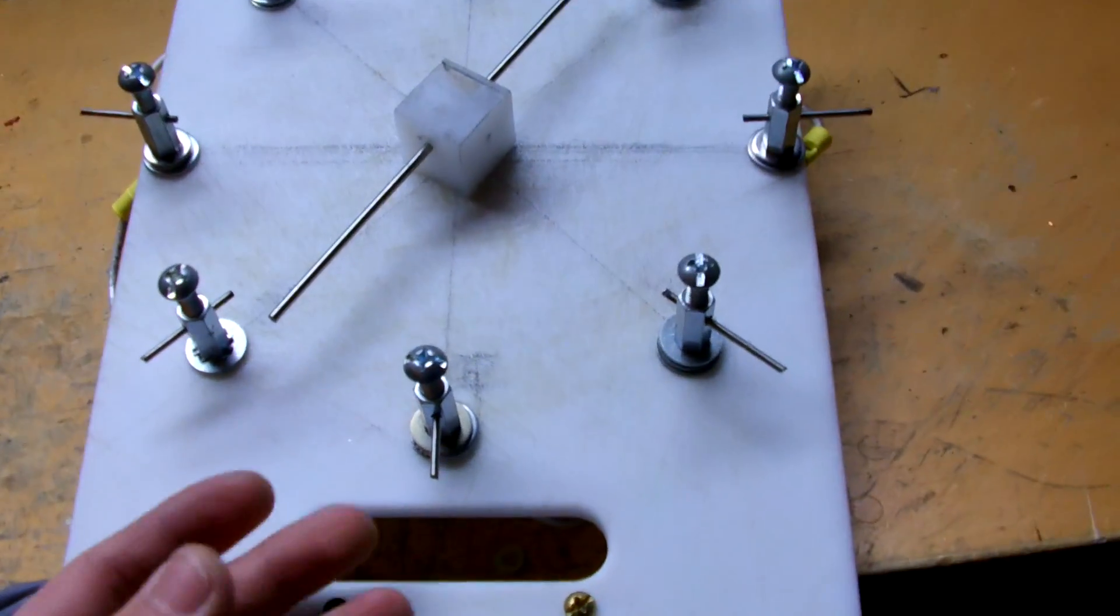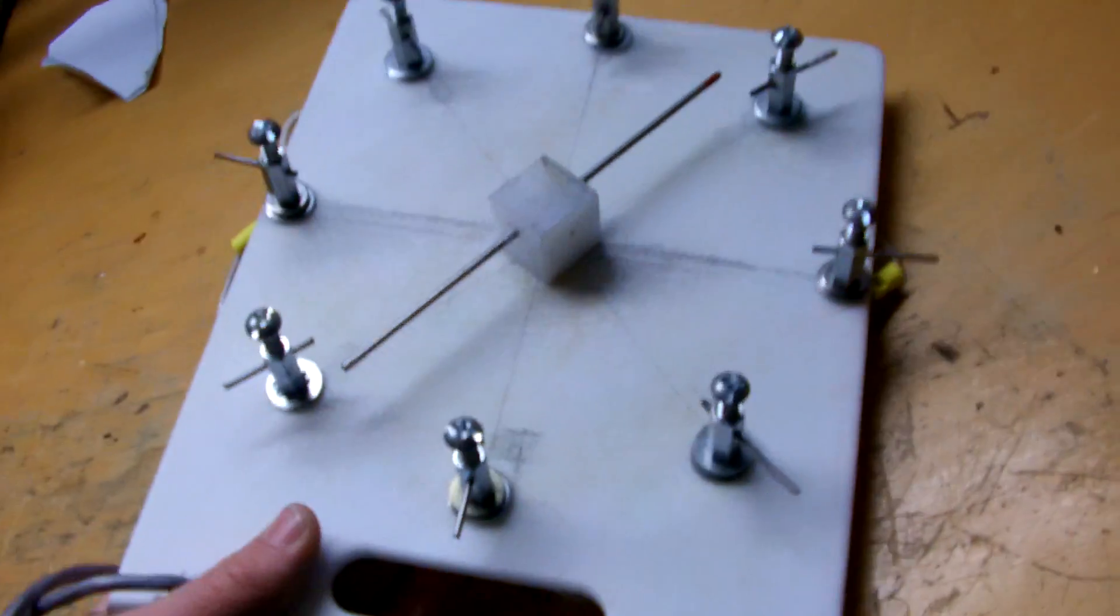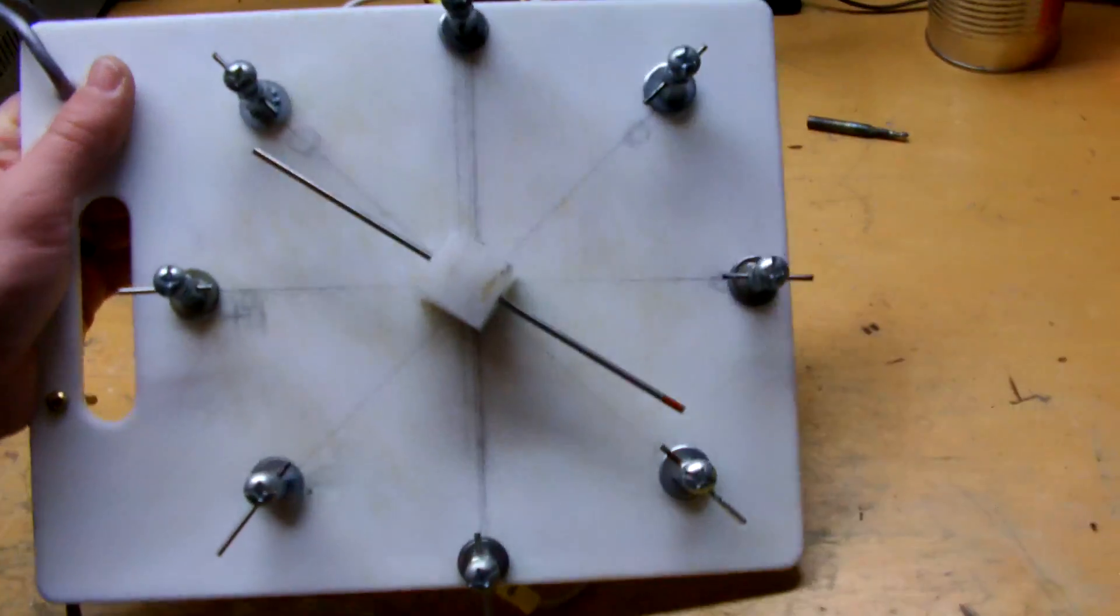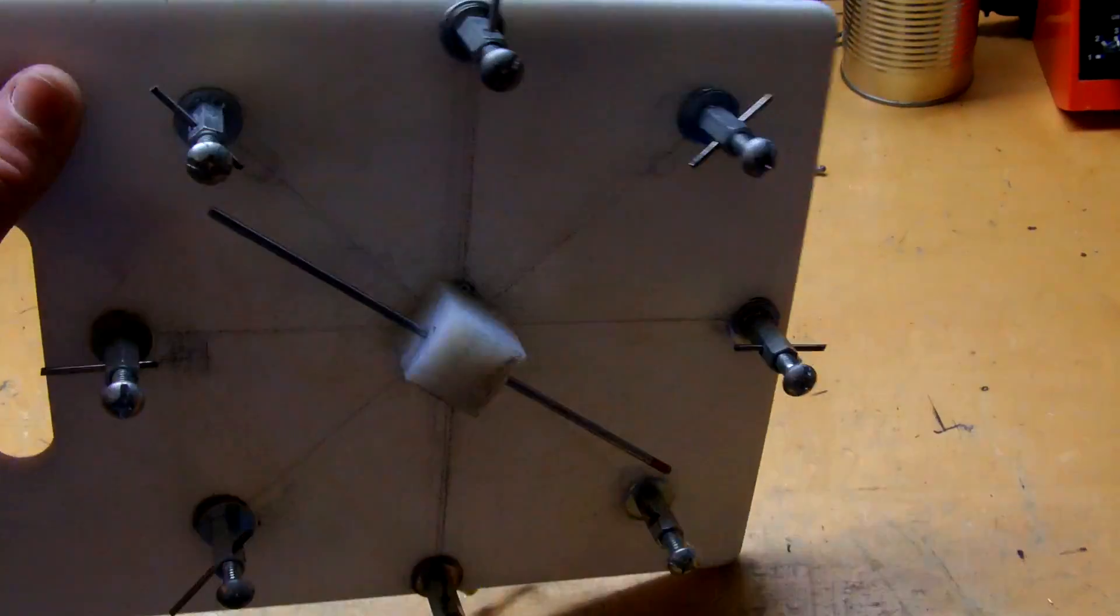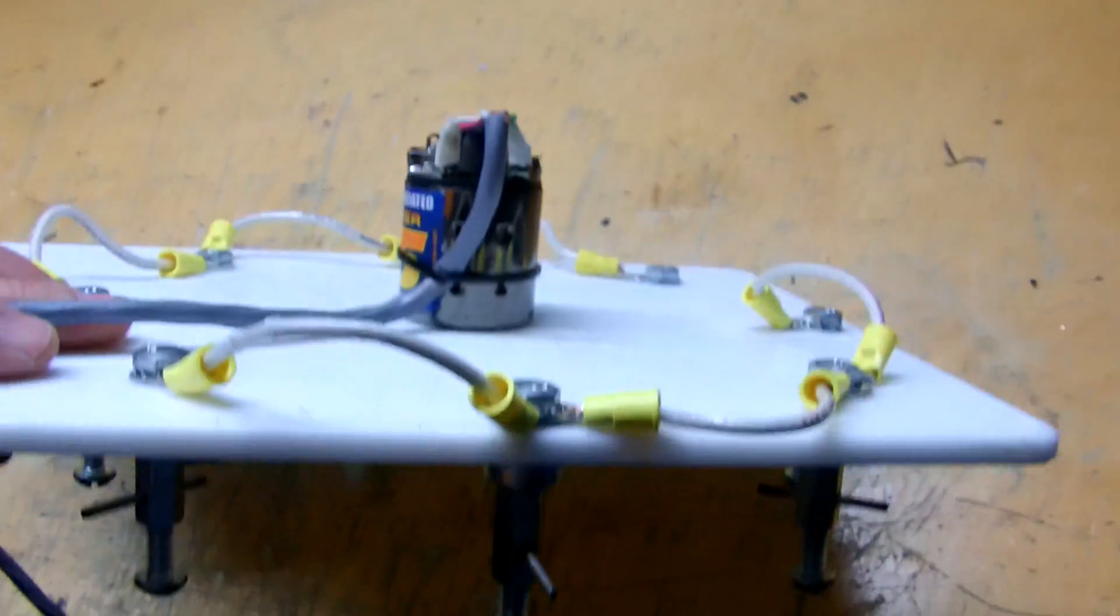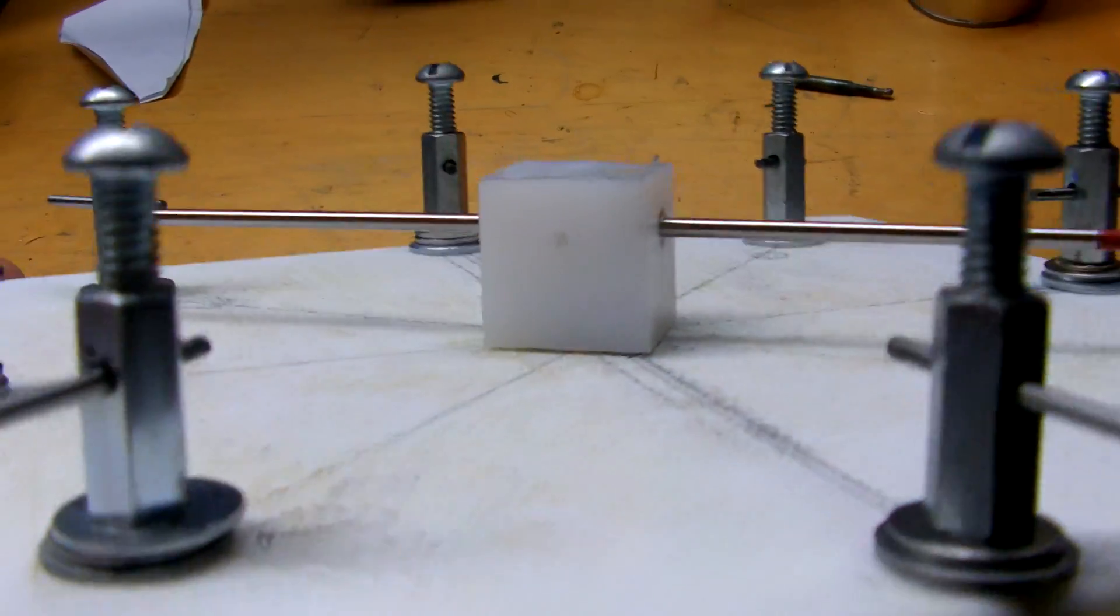Hey guys, just thought it would be cool to take a second to show you my rotary spark gap while it's out of the Tesla coil right now. I took it out to do some adjustments from time to time.